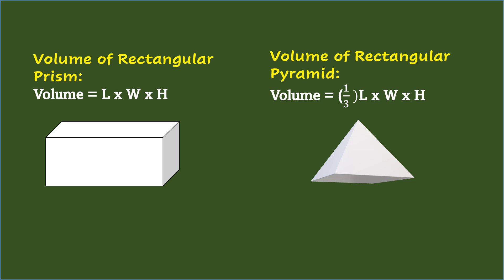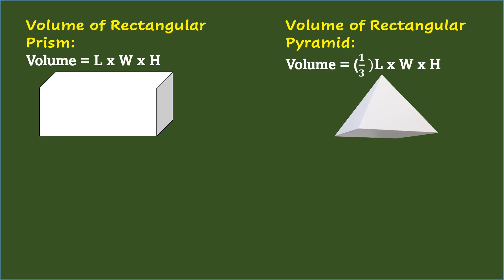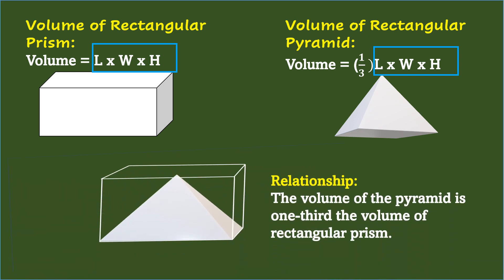Starting with Rectangular Prism, the formula for the Volume is Length times Width times Height. For Rectangular Pyramid, the Volume is one-third times Length times Width times Height. Since Length times Width times Height is exactly the volume of Rectangular Prism, the relationship is that the volume of the Rectangular Pyramid is one-third the volume of the Rectangular Prism.